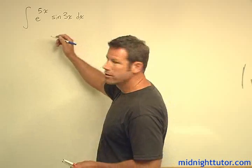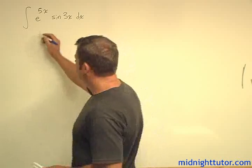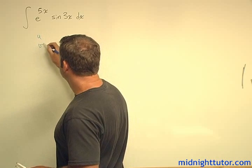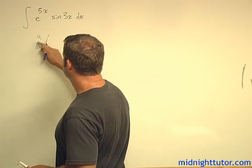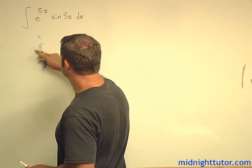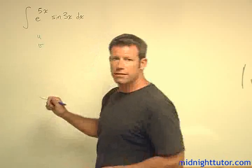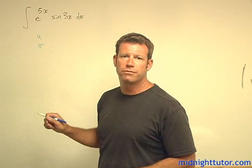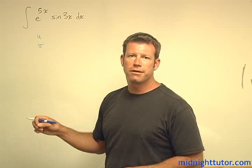So we're going to do parts, obviously. So whenever we do parts we have the u and v. I always like to just put it out there and then once I see what I'm working with, decide which one I'm going to make the u and which one I'm going to make the dv.